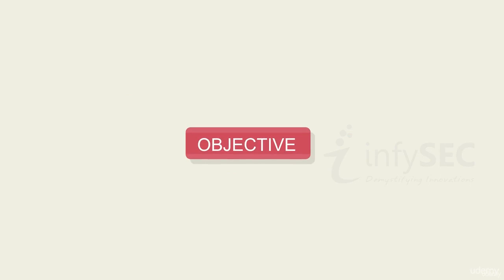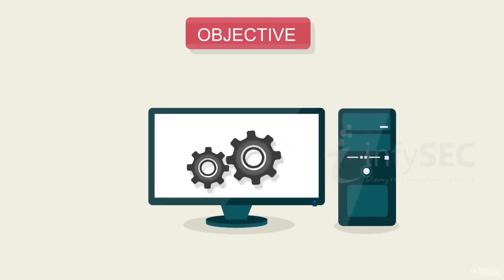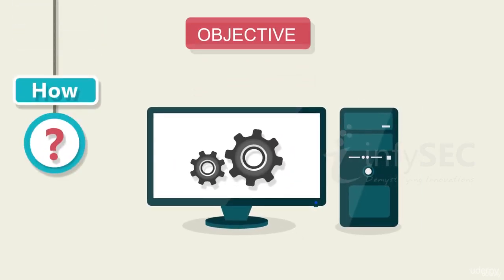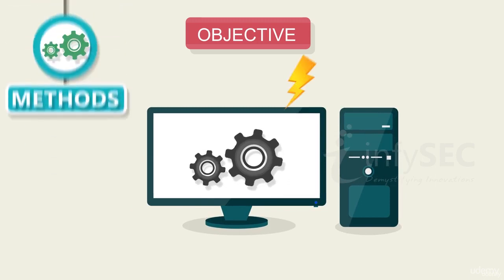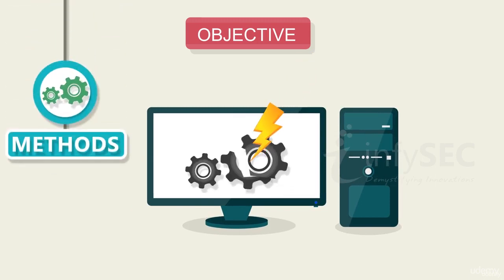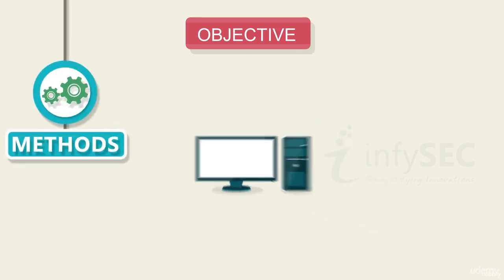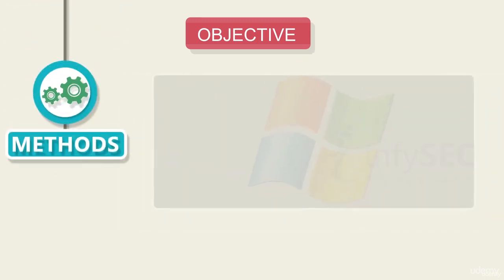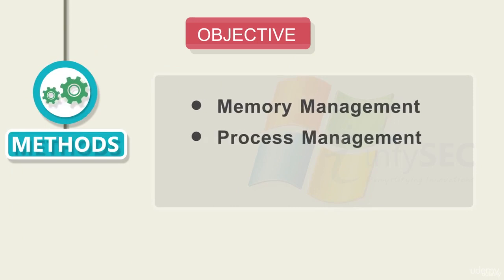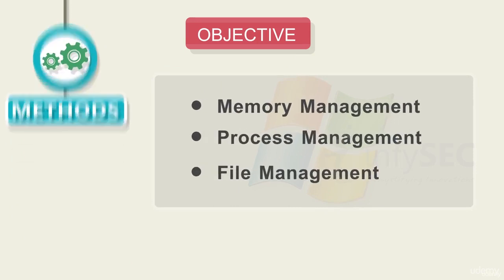Objective: The objective of this chapter is to make the audience understand how a computer works, the methods used to crack system security that target the operating system's memory management, process management, and file management.